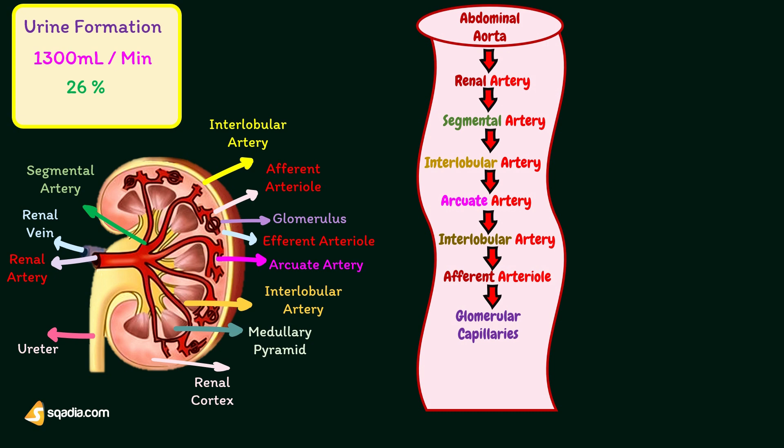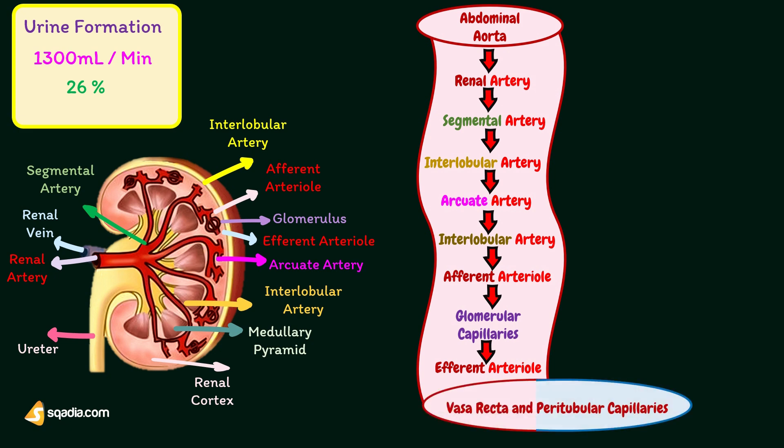The capillary loops unite to form the efferent arteriole, which leaves the Bowman's capsule. Efferent arterioles form a second capillary network called peritubular capillaries, which surround the tubular portions of the nephrons. Thus, the renal circulation forms a portal system by the presence of two sets of capillaries.